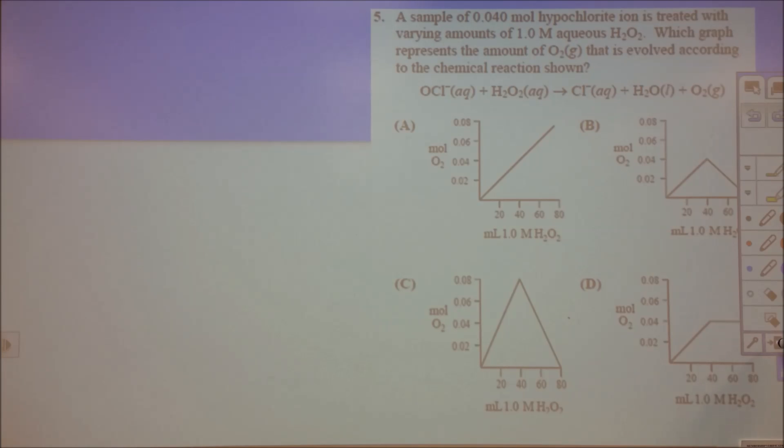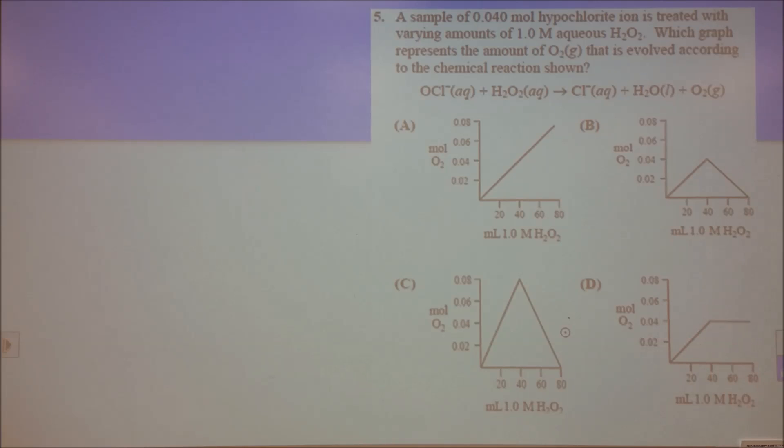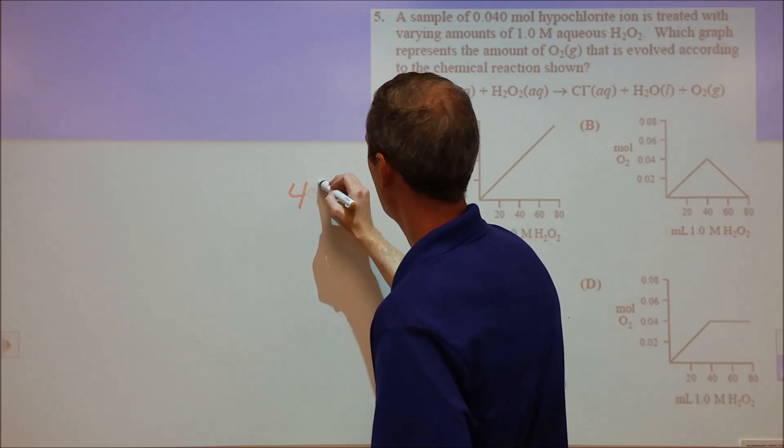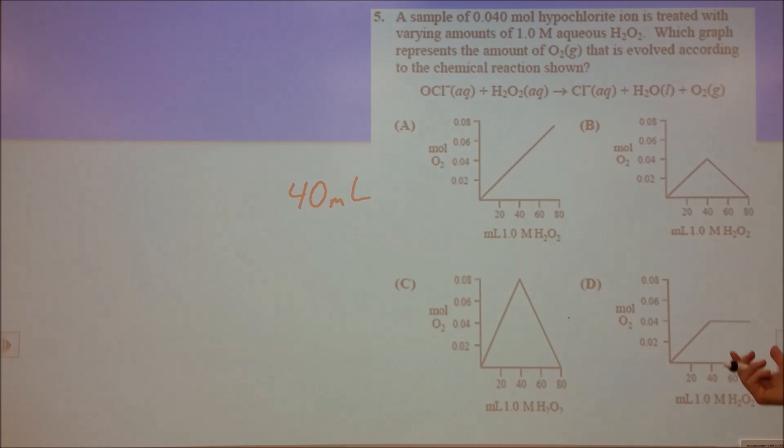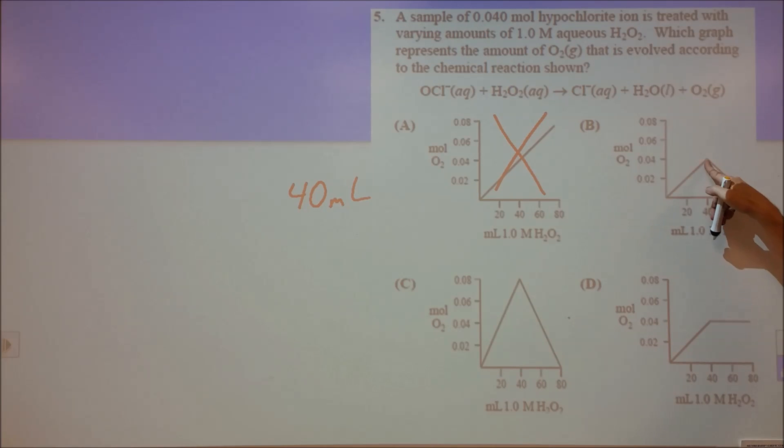Number five is also pretty simple. We're looking at 0.04 moles of hypochlorite reacting with peroxide in a one-to-one ratio, so we need 0.04 moles of peroxide. It's one molar peroxide, so 40 milliliters of one molar gives us 0.04 moles. At 40 milliliters we reach equimolar amounts, so we should see some change in the graph, which eliminates A. After that point, we've run out of hypochlorite, so we don't produce additional gas but maintain the same amount. D is correct. As we add more peroxide we react more until the hypochlorite becomes limiting, then we produce a constant amount.